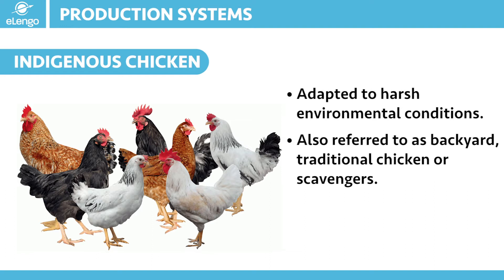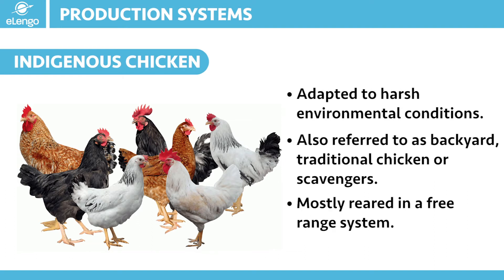When I mention traditional, scavenging, and backyard chickens, a lot of that falls into place for most of us. They are mostly reared in a free range system, and we can relate to this even from growing up — we saw chickens roaming in the village and in the homesteads. This is exactly what is called indigenous chicken farming. Indigenous chickens are usually kept for both meat and egg consumption, especially for home use under the free range system. To achieve a successful business out of this kind of production, the semi-intensive method is what would be recommended.